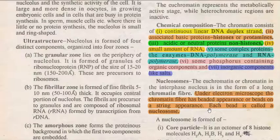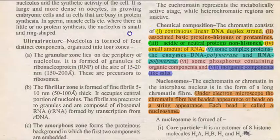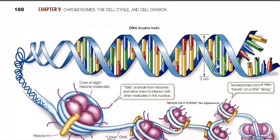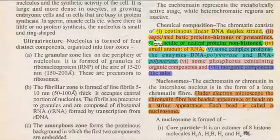Now we look at the composition of chromatin. Chromatin consists of a continuous linear DNA duplex. The second component is basic proteins called histones or protamines, associated with the DNA.